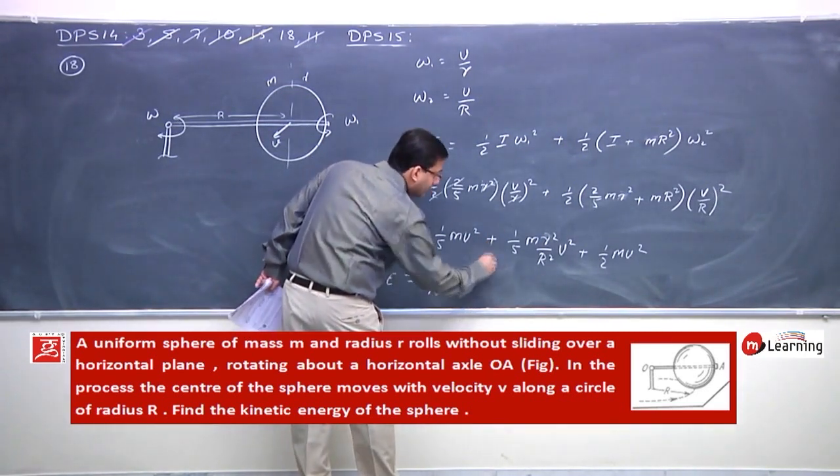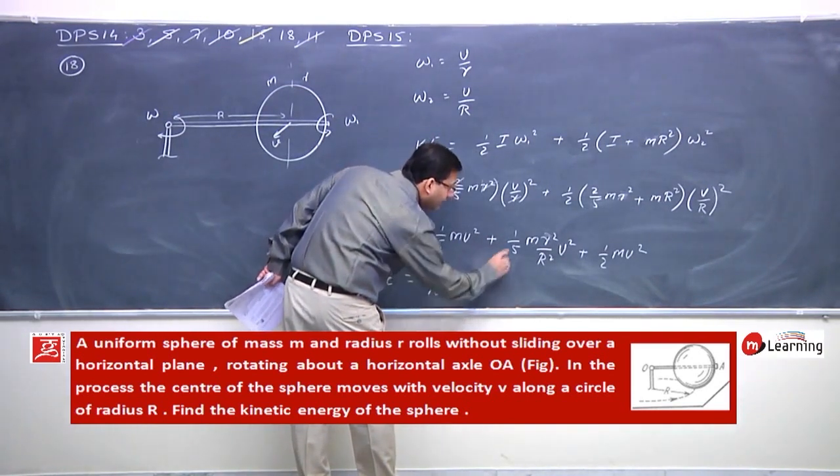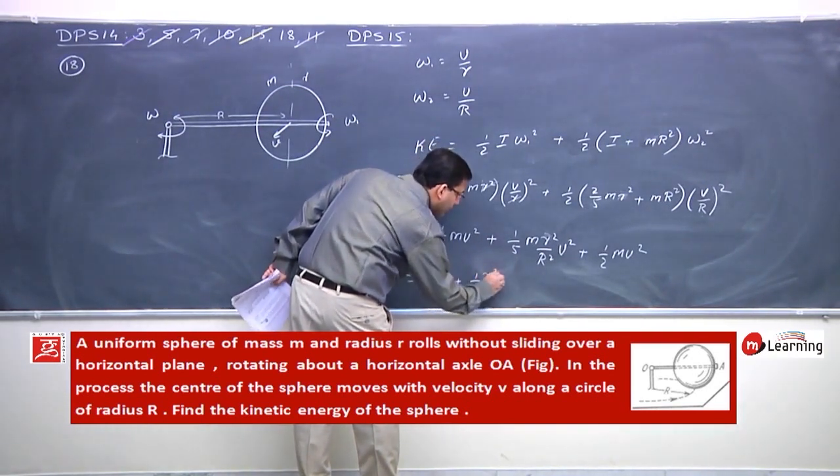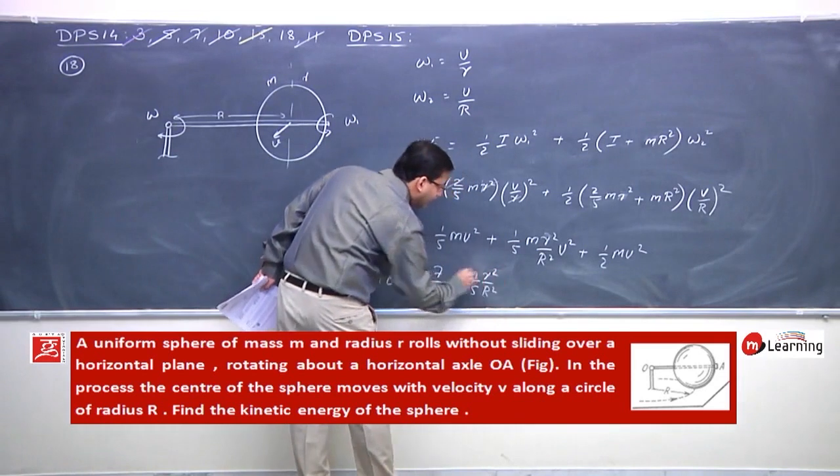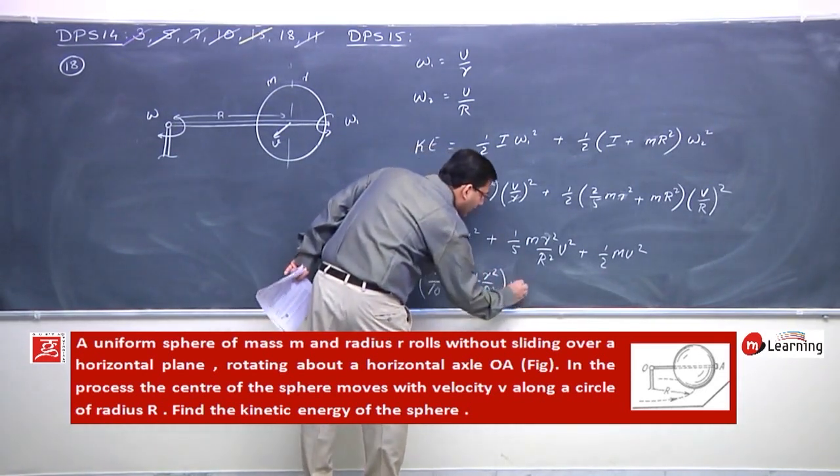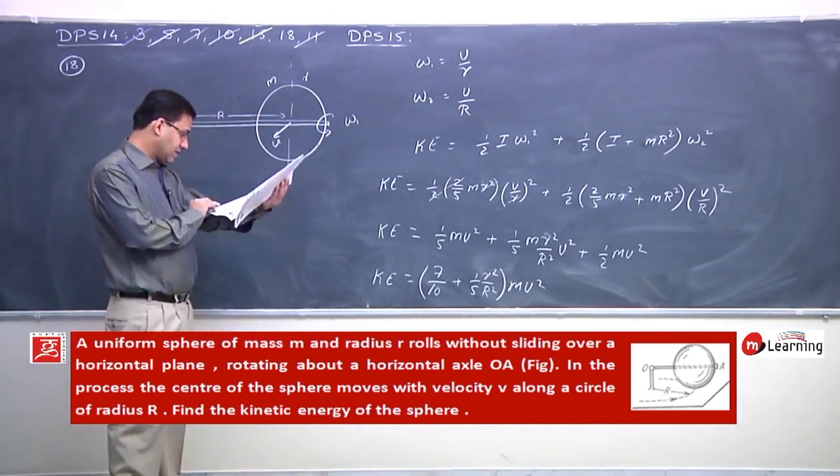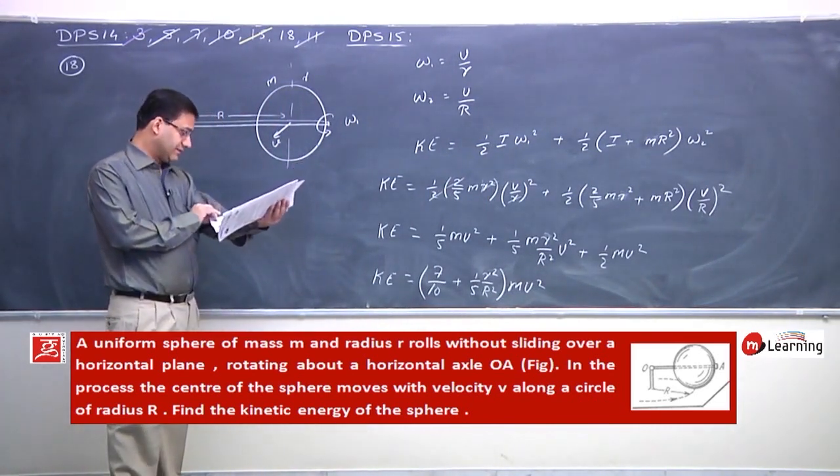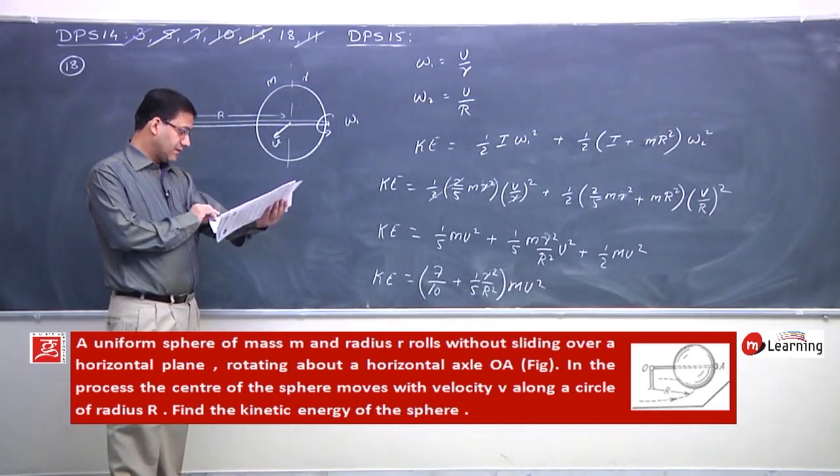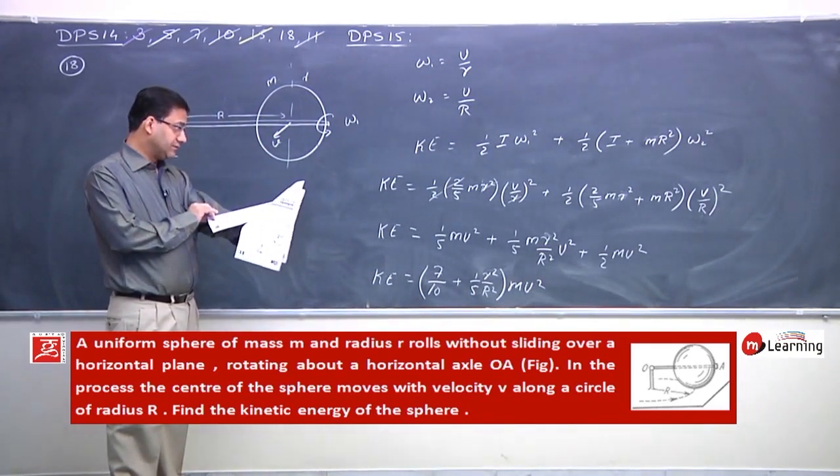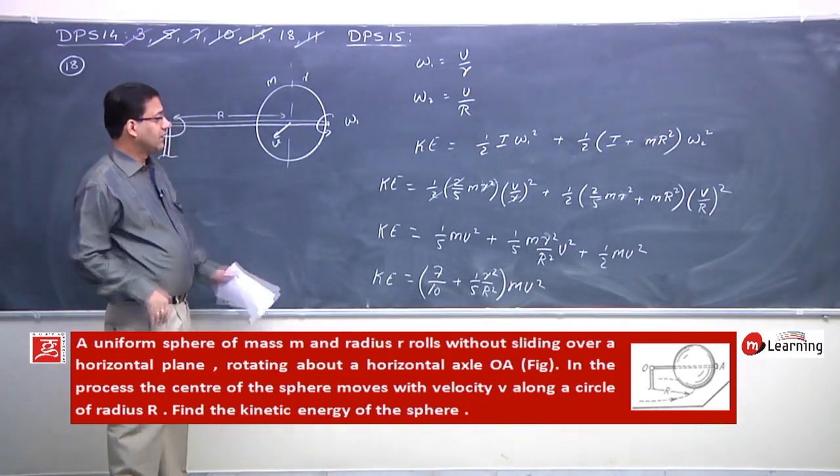Plus 1 by 5 r square plus R square into m v square. This is the kinetic energy.